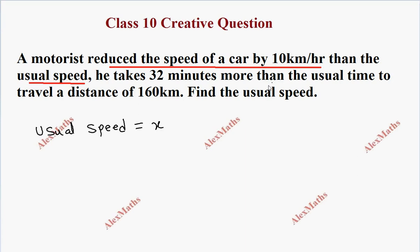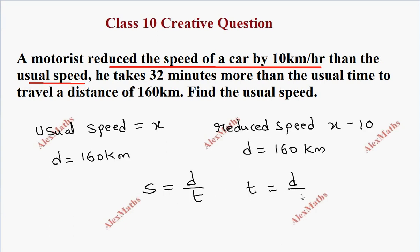He reduced the speed by 10 kilometers per hour. He takes 32 minutes more than the usual time to travel a distance of 160 kilometers. So distance is 160 kilometers. The formula is speed equals distance by time, so time equals distance by speed.